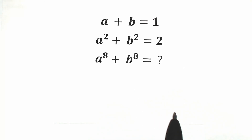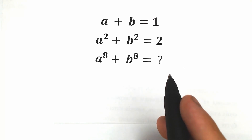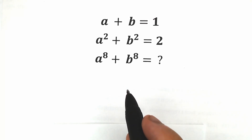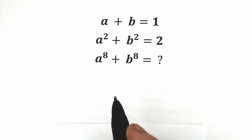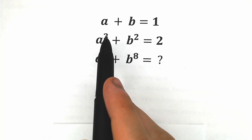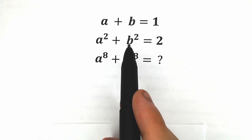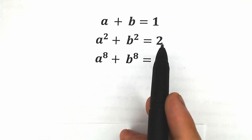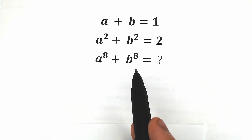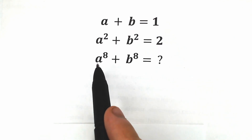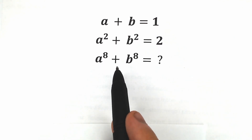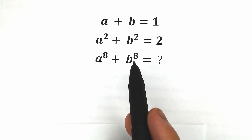Hello everyone, happy to see you here. Welcome back to my channel Higher Mathematics. Today we have a really interesting challenge: a plus b equals 1, a squared plus b squared equals 2, and we need to find a to the 8th power plus b to the 8th power.